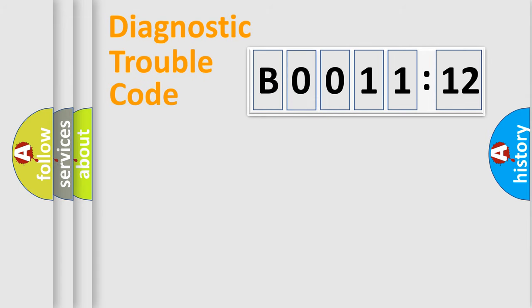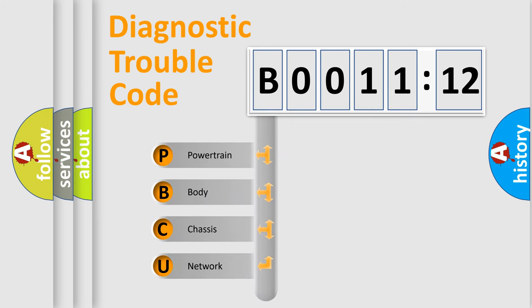First, let's look at the history of diagnostic fault code composition according to the OBD2 protocol, which is unified for all automakers since 2000. We divide the electric system of automobile into four basic units.